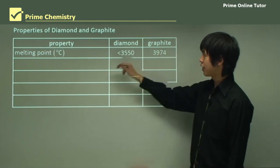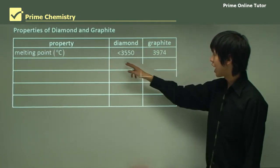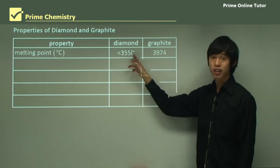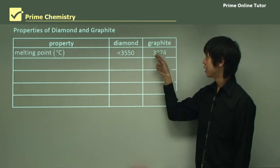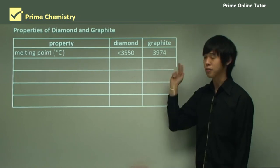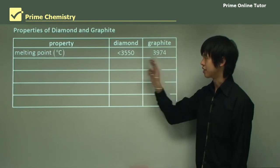Now the properties of diamond and graphite. Diamond has a very high melting point, up past 3,500 Kelvin. And graphite is somewhere in the 3,900 or almost 4,000 degrees Celsius, not Kelvin.